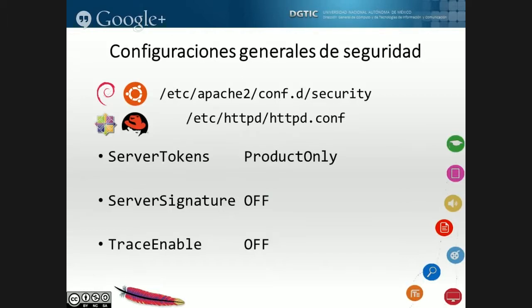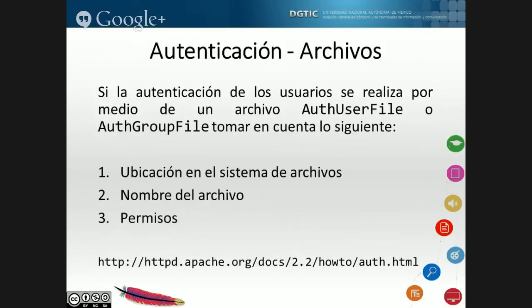Si queremos deshabilitar el método Trace en CentOS o Red Hat, se tiene que hacer directamente en el archivo de configuración. En Debian, Ubuntu y derivados, hay un archivo específico que es el archivo de seguridad. Si implementamos autenticación, ya sea Basic o Digest, damos tres recomendaciones principales: la ubicación en el sistema de archivos, el nombre bajo cierta regla de Apache, y los permisos. Para más información sobre autenticación en Apache, está disponible el how-to, en inglés y en español.